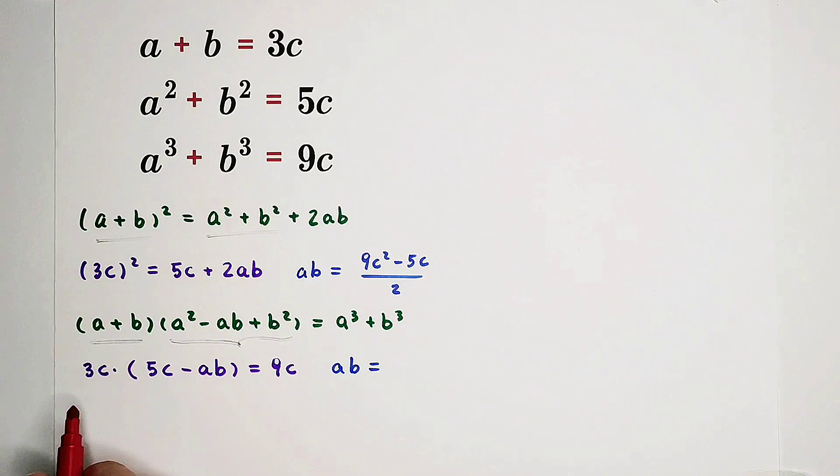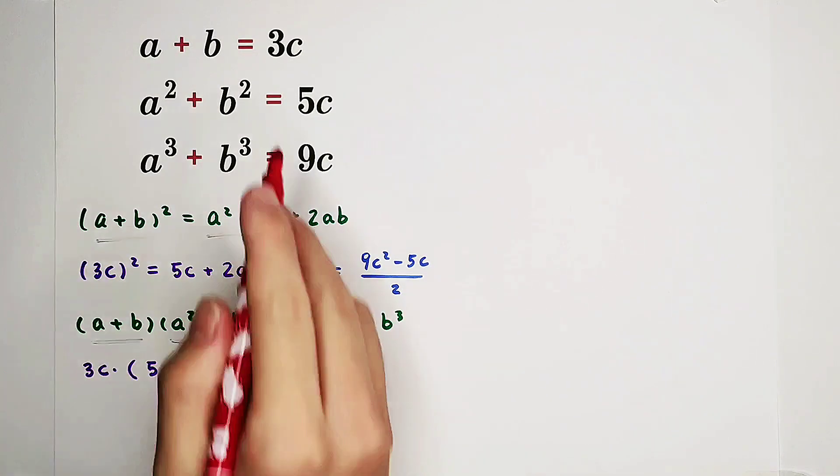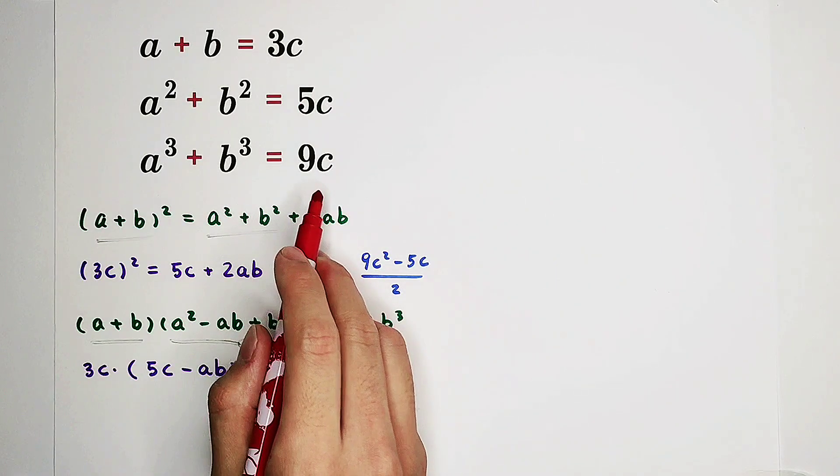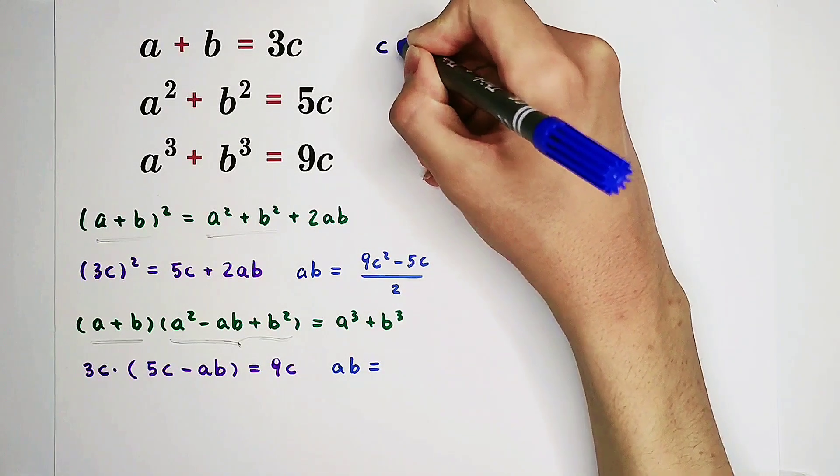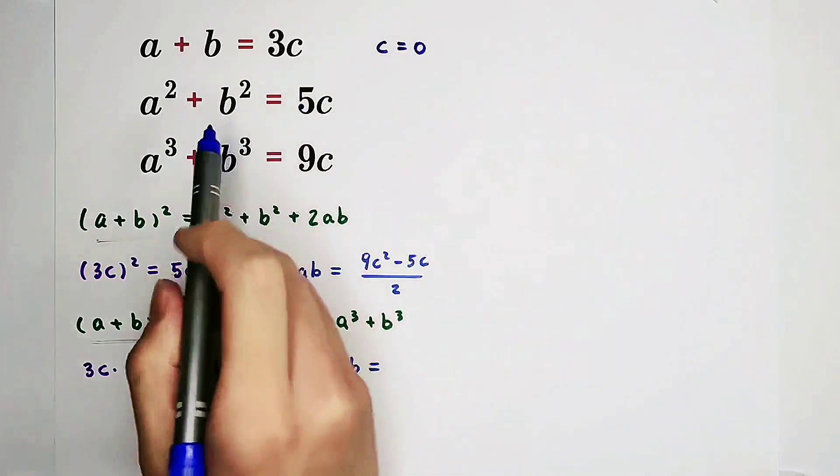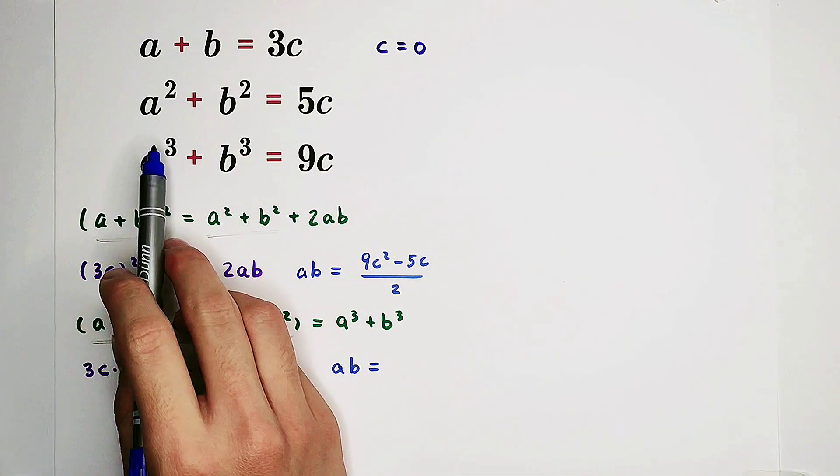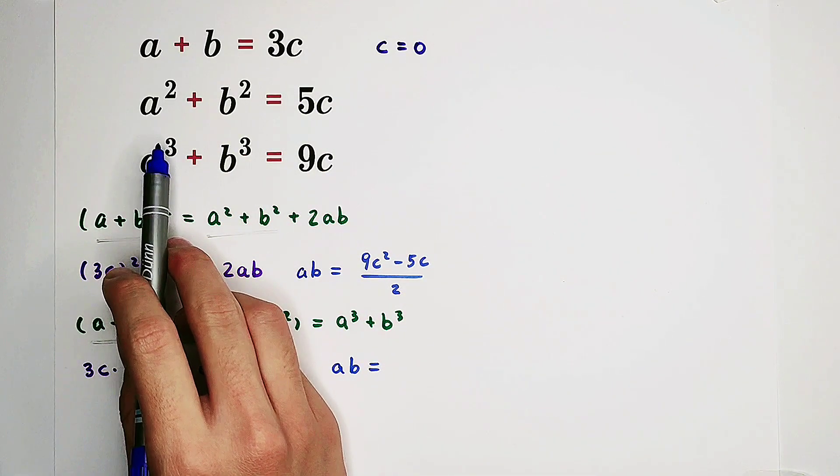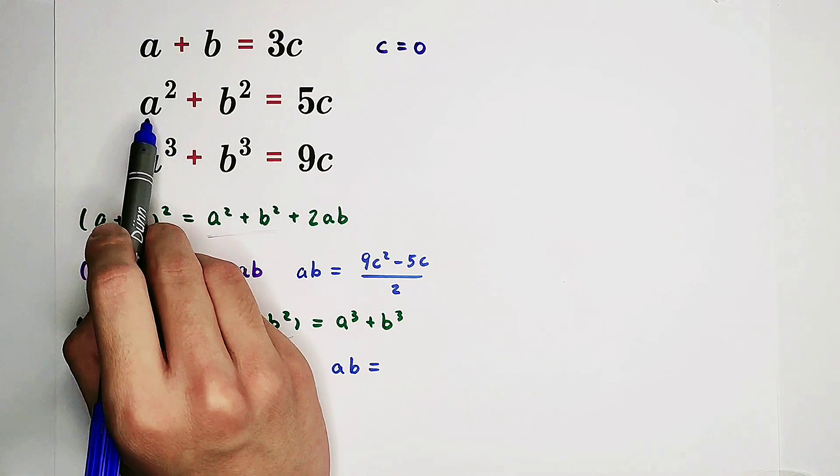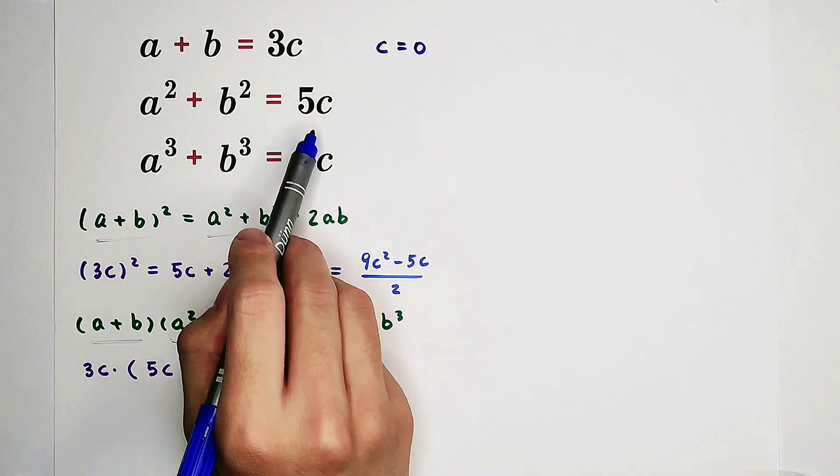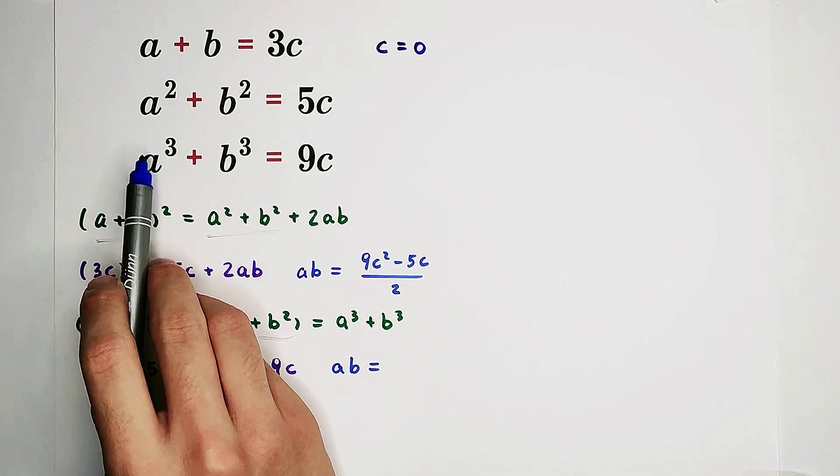What happens if c equals 0? Then, this equation will also hold. It's true. That means c can be equal to 0. So if c is equal to 0, we can conclude very easily that a has to be equal to b, and they have to be 0. Why? a squared plus b squared equals 0.